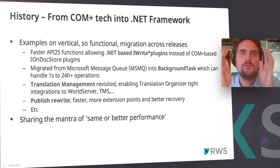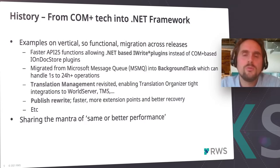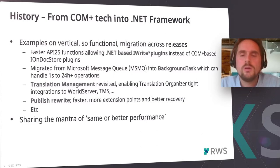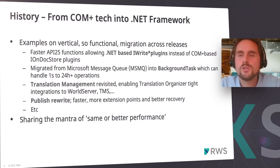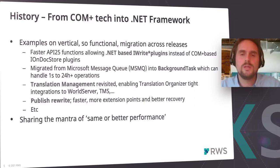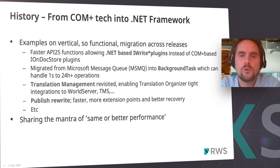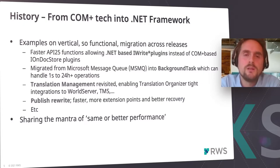We typically try to migrate in a vertical way — functional migration — and not horizontal layers like rewriting the data layer first, then business logic, then the API. It was more vertical, and it also made it very visible for you over time. For example, when we introduced API 2.5 functions that allowed iWrite plugins. In the past, you had to develop extensions and event-driven systems based on a COM+-based technology called iOnDocStore. That was a big deal with a lot of changes performance-wise and predictability-wise.